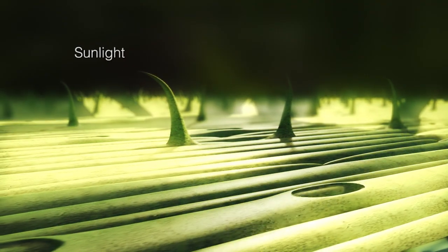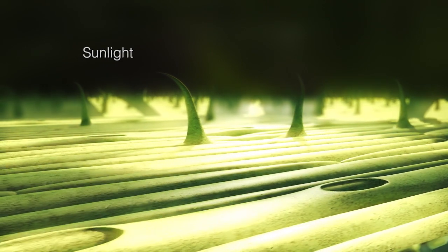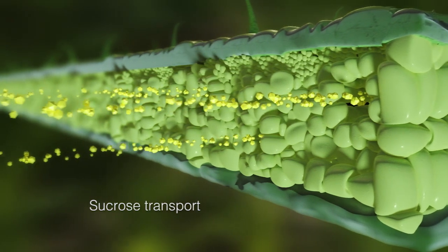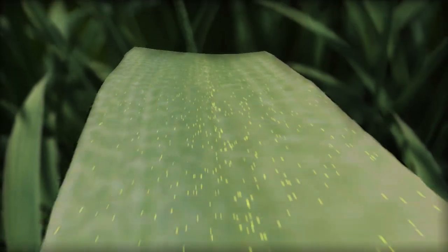Sunlight, which is converted inside the chloroplasts into chemical energy. And transport of sucrose away from the leaf via the phloem system to areas of active growth, including the developing ear of grains.